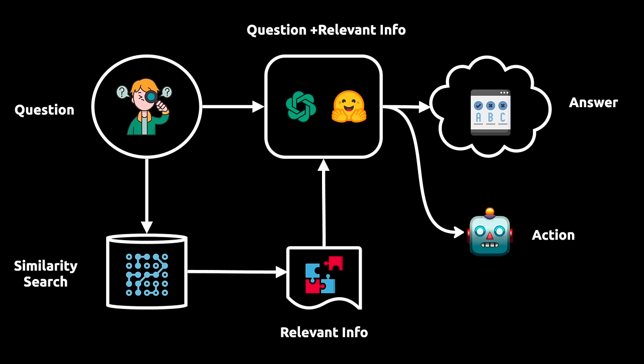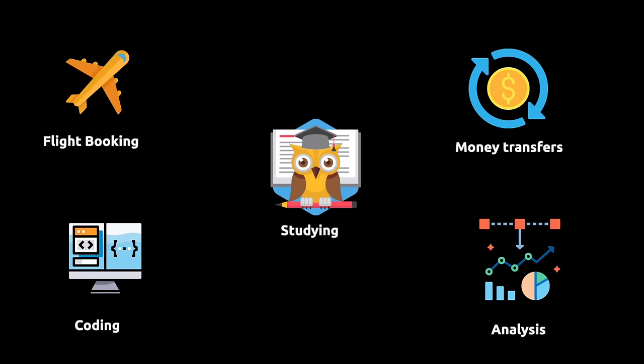LangChain helps build applications that follow a pipeline like this. These applications are both data-aware — we can reference our own data in a vector store — and they are agentic: they can take actions and not only provide answers to questions. These two capabilities open up an infinite number of practical use cases. Anything involving personal assistance will be huge. You can have a large language model book flights, transfer money, pay taxes. Imagine the implications for studying and learning — you can have a large language model reference an entire syllabus and help you learn the material as fast as possible.